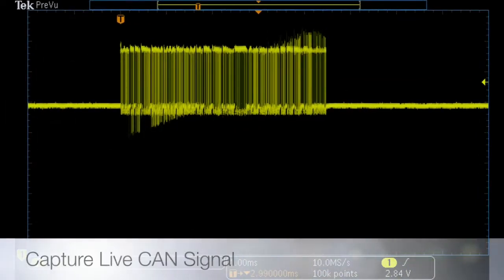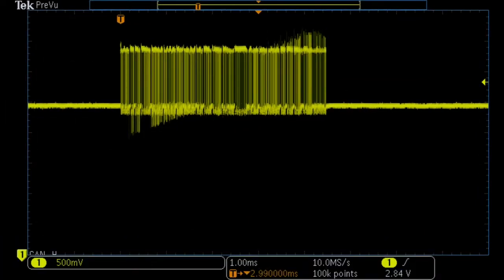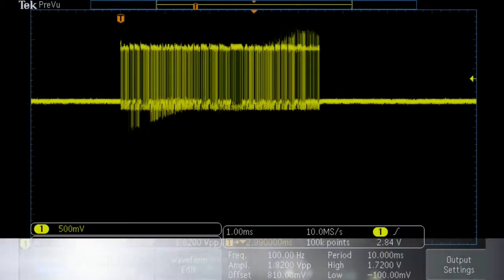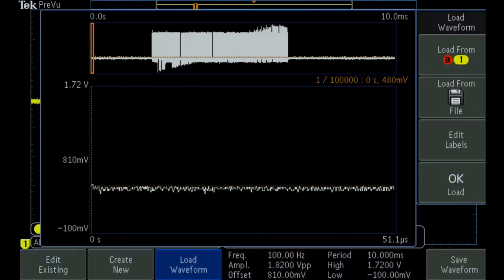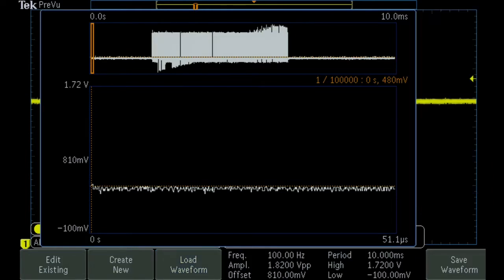To test the margin of a serial receiver, we simply capture a live signal with the scope's analog channel and load the signal into the integrated arbitrary function generator's edit memory. Now we have replicated our desired signal and can use this as the stimulus to our serial receiver.